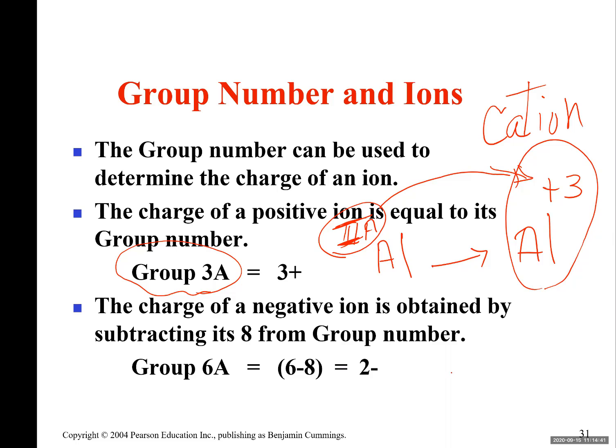If I ask you what charge do you expect for oxygen, which is a main group non-metal, what sort of ion do you expect from oxygen? Oxygen is in group 6A. Write this number minus 8. It gives you negative 2. You can put the sign after number or before. So oxygen is going to have a negative 2 charge.